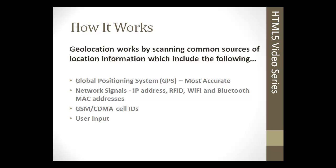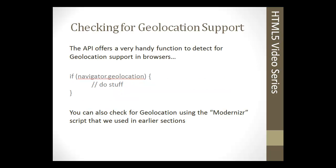How does geolocation work? It works by scanning different sources of location. GPS — global positioning system — is probably the most accurate method and can pinpoint locations better than the rest. Network signals can be obtained through IP addresses, Wi-Fi and Bluetooth connections, and GSM cell IDs. Finally, there's user input. These are all ways that geolocation can actually get your position.